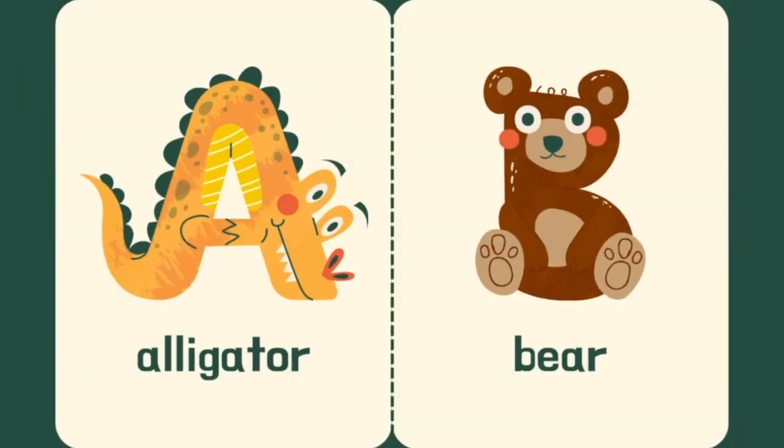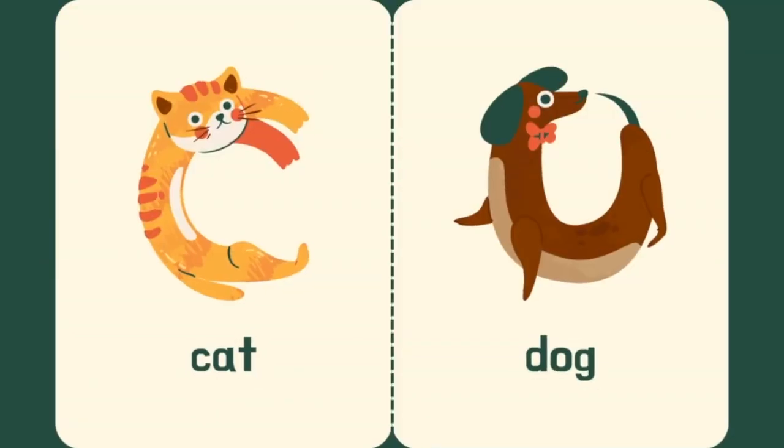A is for Alligator. B is for Bear. C is for Cat. D is for Dog.